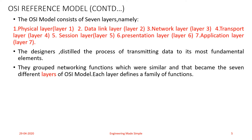The designers of the OSI model grouped networking functions which were similar, and those became the seven different layers of the OSI model. Each layer defines a family of functions. When the designers were developing this OSI model, they came up with a layered architecture by grouping layers with similar networking functions together — that is how each layer was developed and the seven different layers of the OSI model were formed.